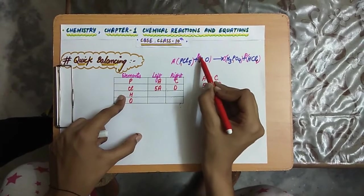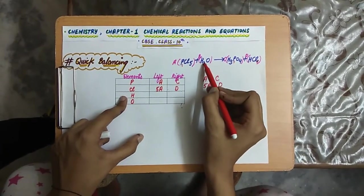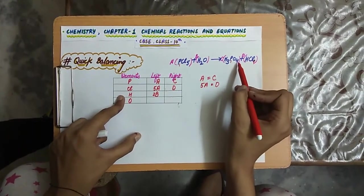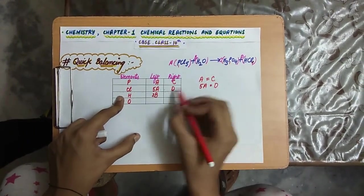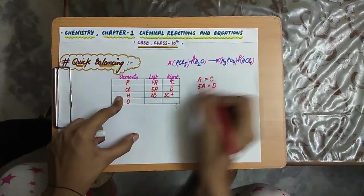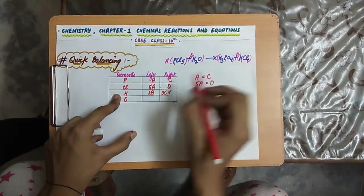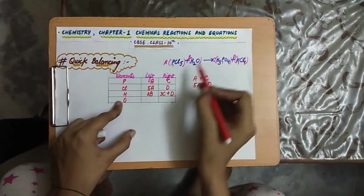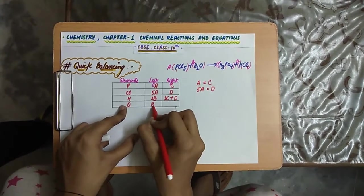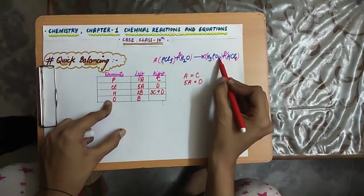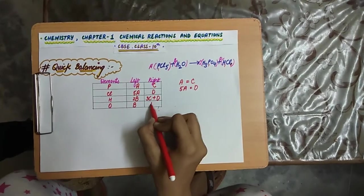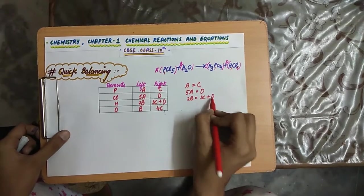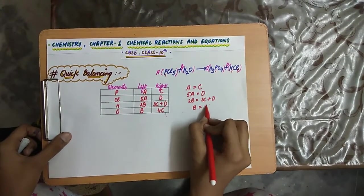For hydrogen: on the left it is 2B (from H₂O), and on the right it is 3C + D (from H₃PO₄ and HCl). So 2B = 3C + D. For oxygen: on the left it is B (one oxygen in H₂O), and on the right it is 4C (four oxygens in H₃PO₄). So B = 4C.